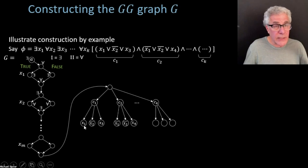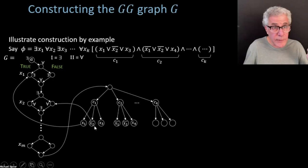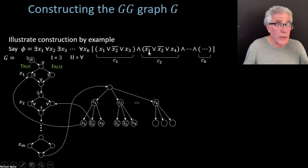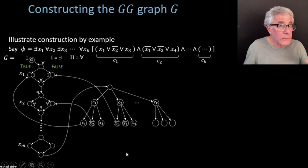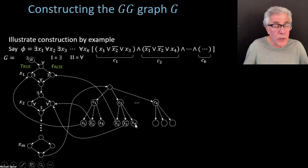For clause c₁ with literals x₁, x₂-bar, x₃, there's a node for each literal. The same for clause c₂, and so on. Now each literal node connects back to its own diamond in the assignment part of the graph: x₁ connects back to the true side of the x₁ diamond; x₂-bar (being negated) connects to the false side of the x₂ diamond; and so on. That's the whole construction.